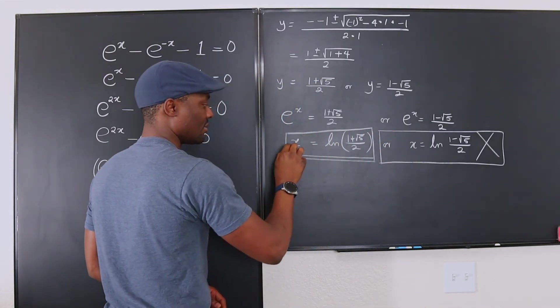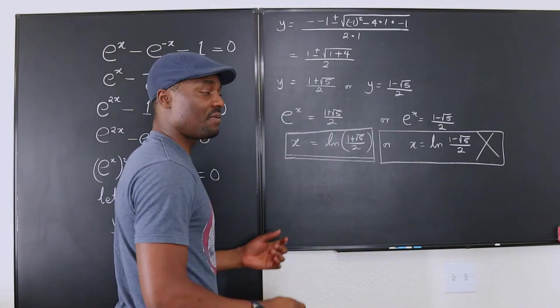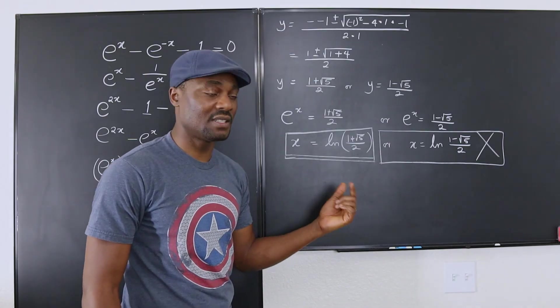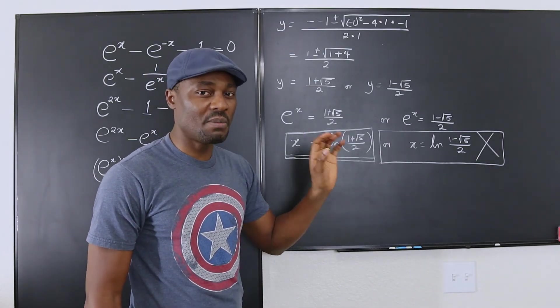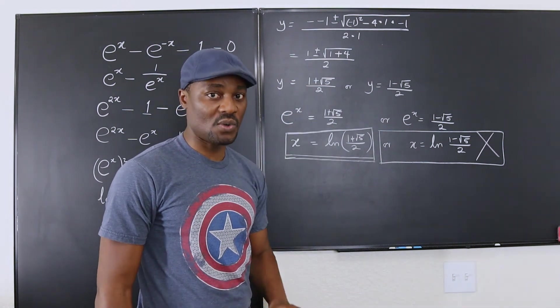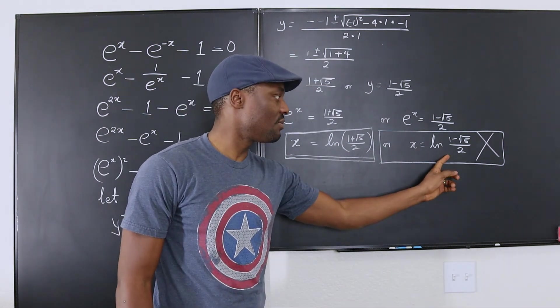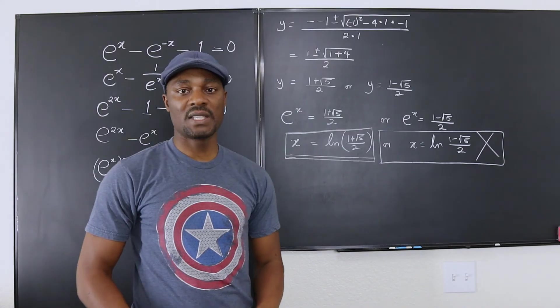So the only acceptable answer is this one. This is acceptable. Make sure you do the final check any time you work like this, especially when you're dealing with natural log. It's always the positive value that we look for, not the negative. So this can't be the answer. And this is the only correct answer.